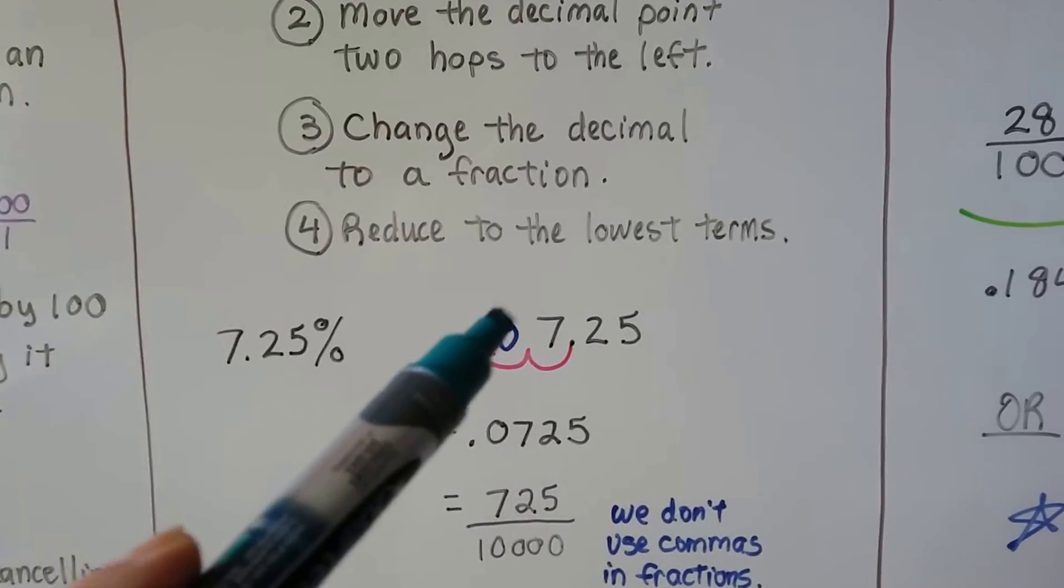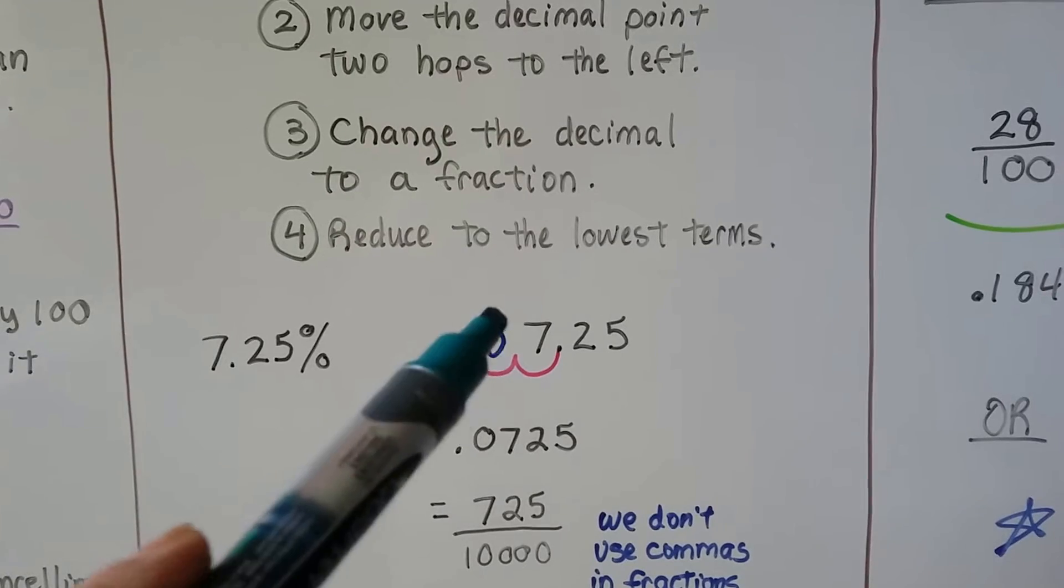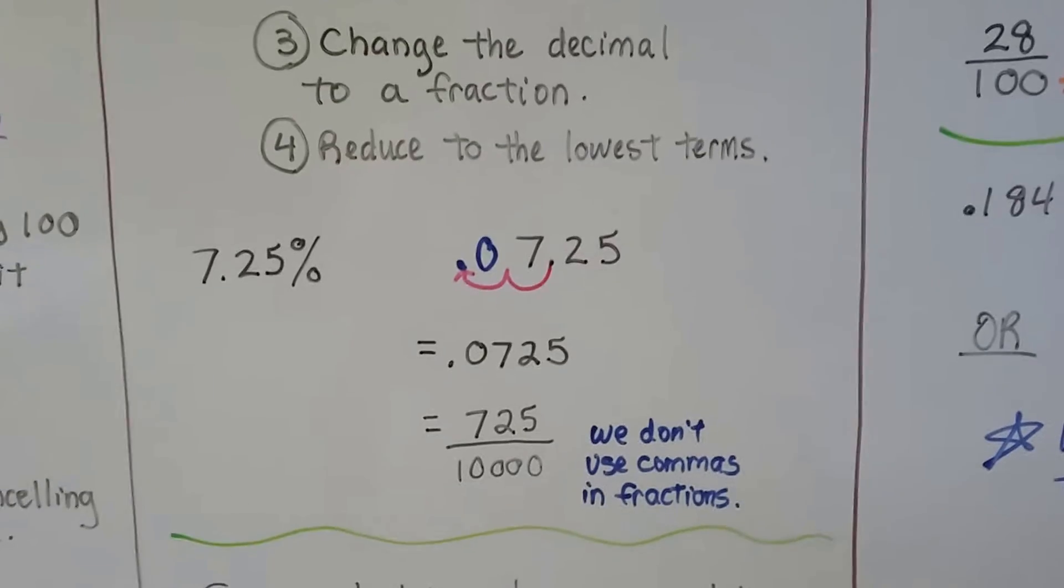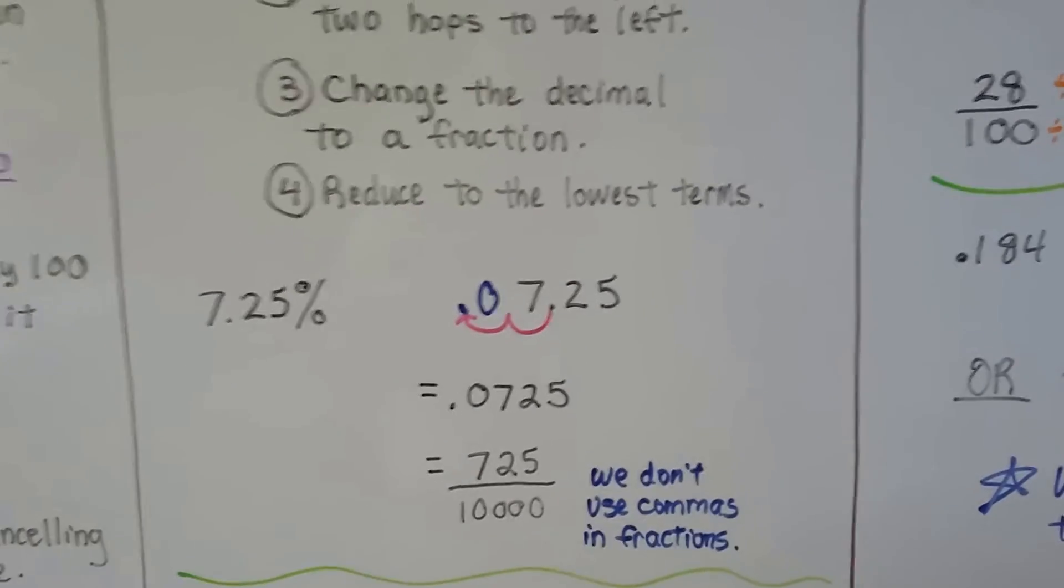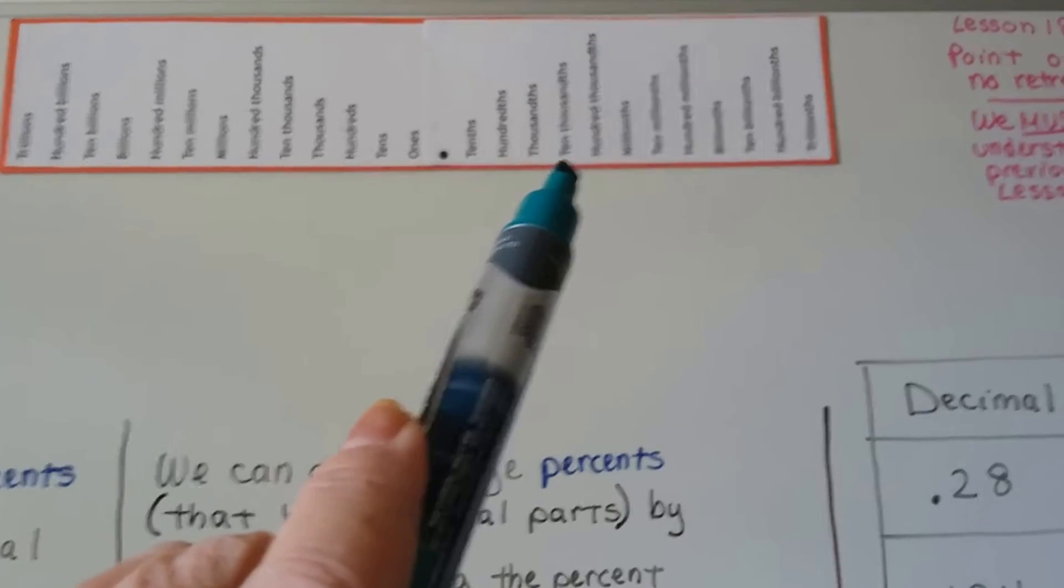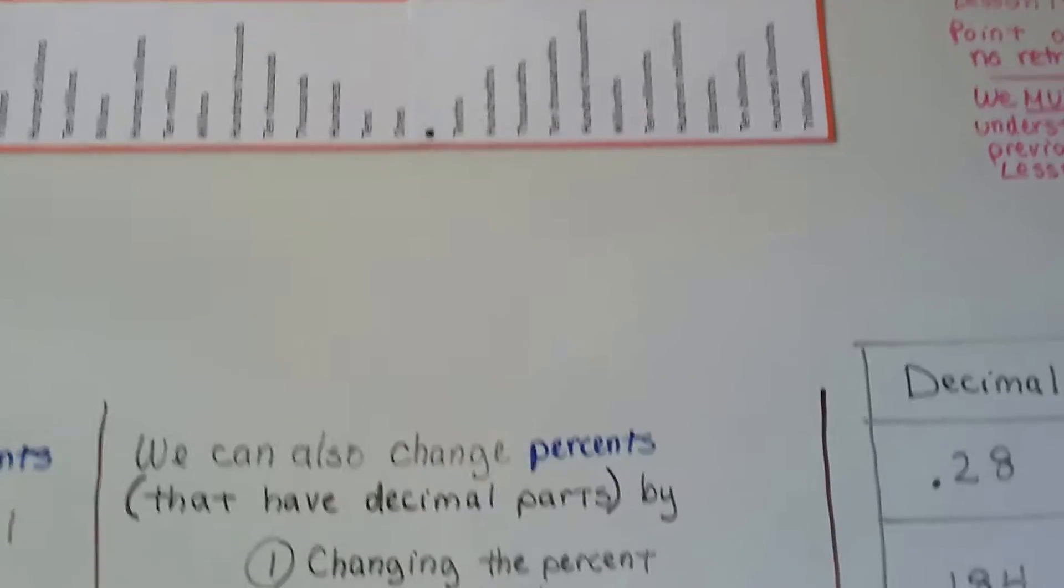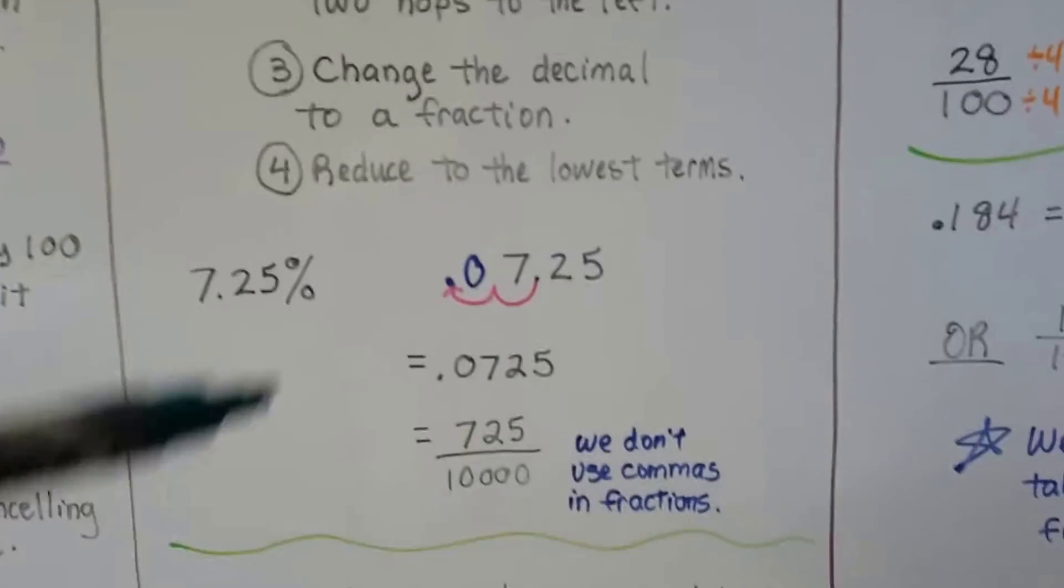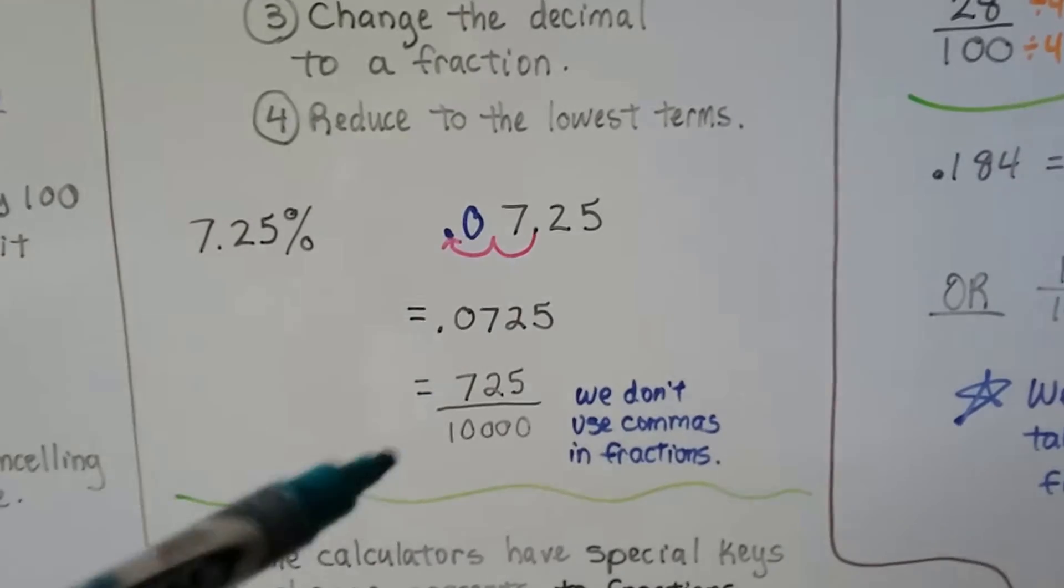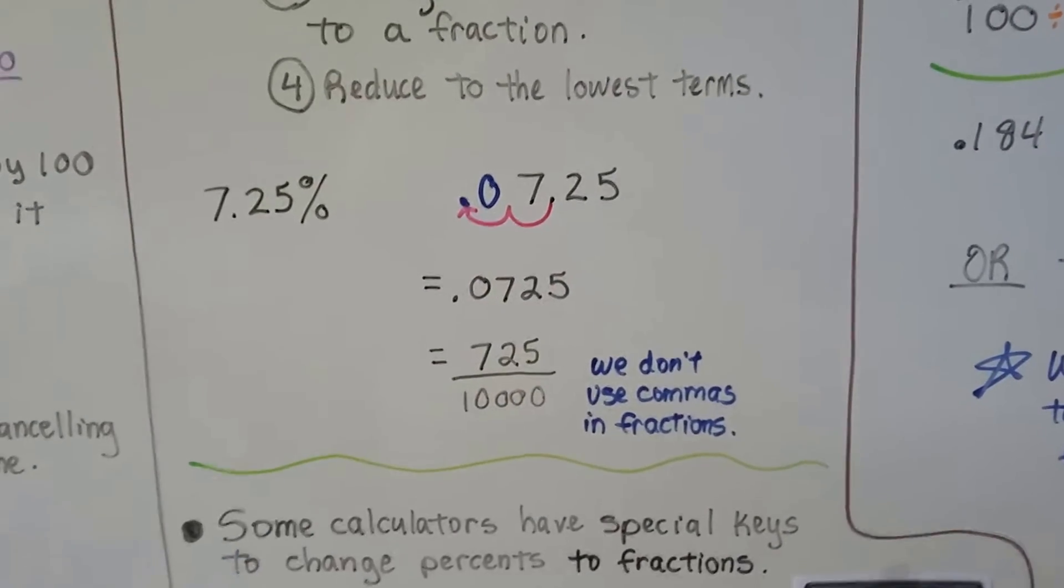We move the decimal point two hops to the left. One, two. We had to add a zero as a placeholder because the decimal ended up way over here with an empty space. That gives us 0.0725, and remembering your place values for decimals, that puts us at 10,000. That fourth place from the decimal. Tens, hundreds, thousands, ten thousands. So we have 725 ten thousandths. We don't use commas in fractions. So it's just a 10 with four zeros.